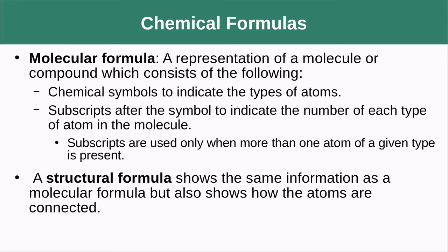A molecular formula is a representation of a molecular compound. It uses chemical symbols from the periodic table with subscripts after the symbols to indicate the number of each type of atom in the molecule. Subscripts of one are usually omitted — we assume there is only one of that atom.